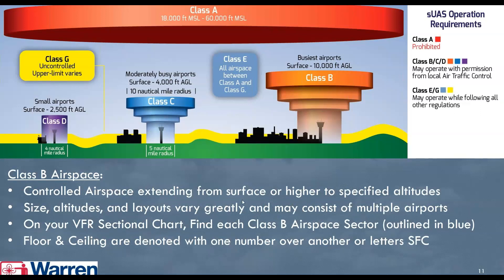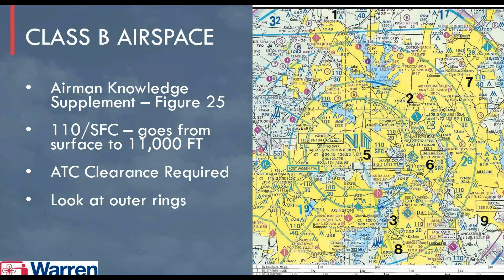Class B is controlled airspace with an aircraft control tower. It extends from the surface to a higher specified altitude. Size, altitudes, and layouts can vary greatly and may consist of multiple airports in highly congested areas. You will find these on the sectional chart. The floor and ceiling are denoted with one number over another, or the letters SFC. For example, this may be SFC to 2,500 feet; the next layer from 2,500 to 5,000; then 5,000 to 7,500; and 7,500 to 10,000 feet AGL.